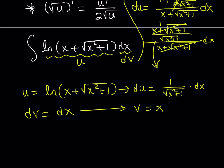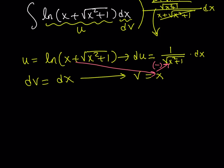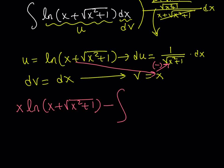Now I pretty much have everything I need. So let's put this together. I'm going with uv first, which is x times ln of x plus the square root of x squared plus 1. Then minus the integral of v du — don't forget the minus sign. When you multiply those two expressions, you get a radical in the denominator.